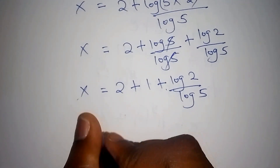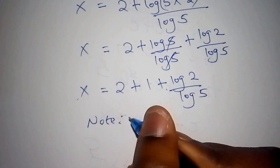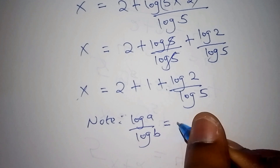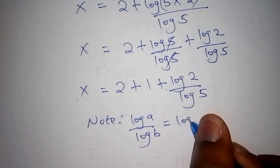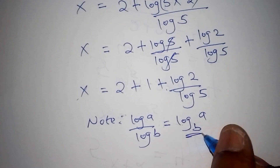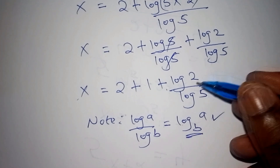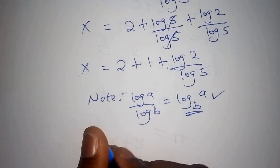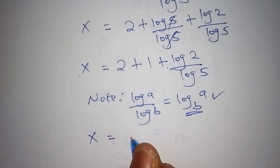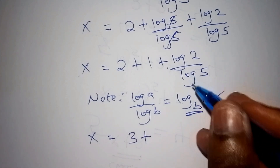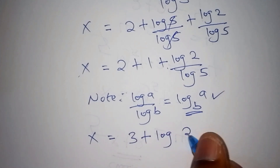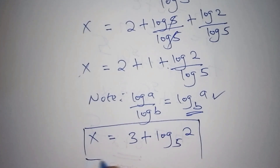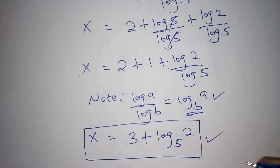Let's note that if we have log a all over log b, the result is log a to base b. Using this rule, 2 plus 1 gives us 3, plus log of 2 to base 5. So x equals 3 plus log base 5 of 2. This is our value of x.